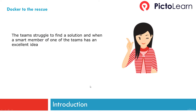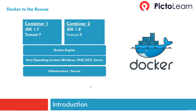When the teams struggle to find a solution, one member suggests using Docker. The infrastructure sits on the bottom, the host OS sits on top, and on top of that is the Docker engine. The Docker engine is responsible for spawning container 1 running JDK 1.7 with Tomcat 7, and container 2 running JDK 1.8 with Tomcat 8. These containers have their own processing ability, own memory, and own volumes mounted to the host operating system.